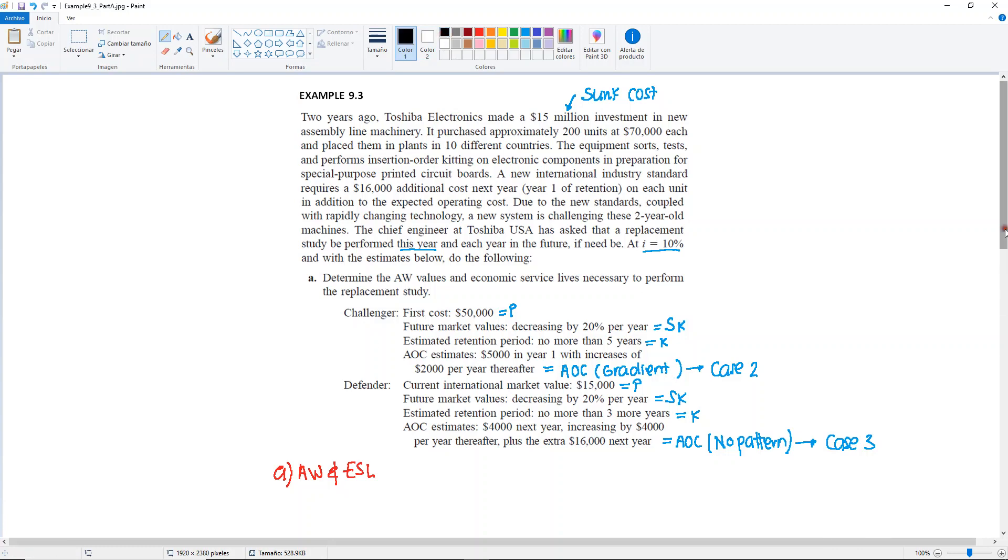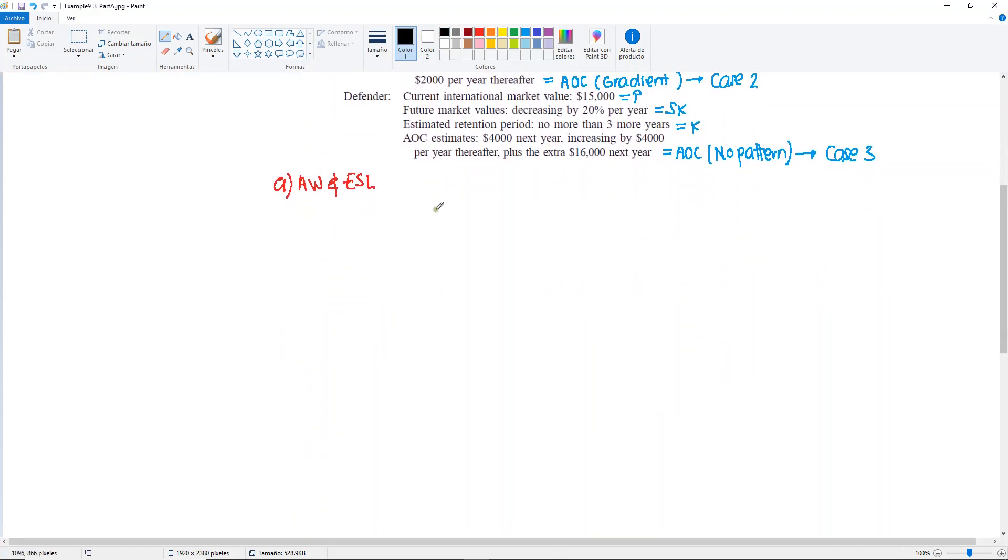Okay, so then again, it's easier if you put everything in a table. But first of all, let me write down the equation that we will be using. Total annual worth of K is equal to minus P, find A given P, at an interest rate in year K, plus the salvage in that year, find A given F, at an interest rate for K, minus the annual worth of AOC that we will be calculating, because it's not uniform.